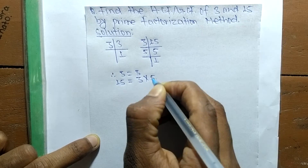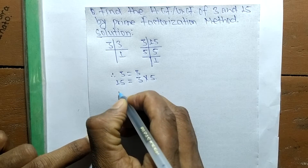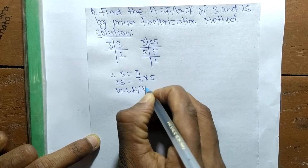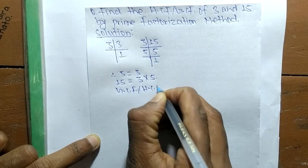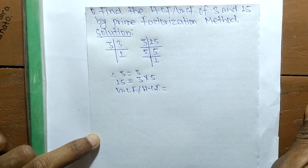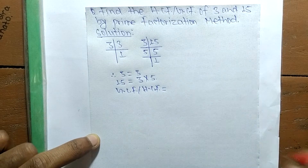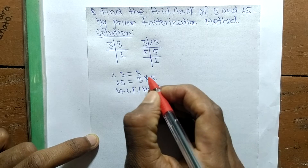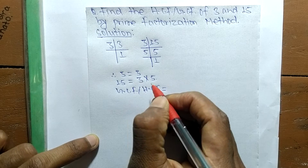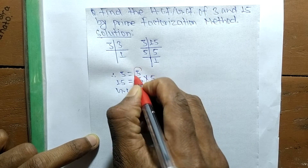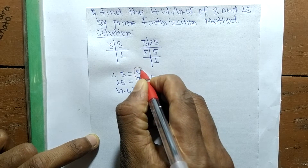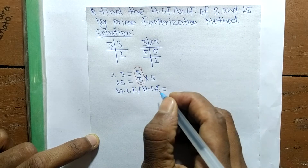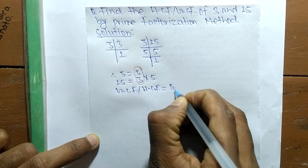To find the GCF or HCF, we identify the common factors in all these prime factors. The common factor here is 3, so the GCF or HCF is equal to 3.